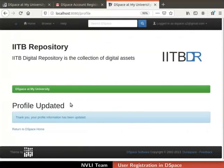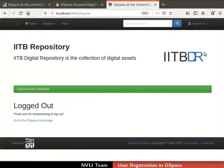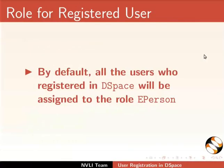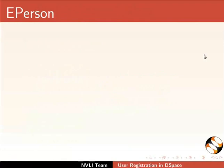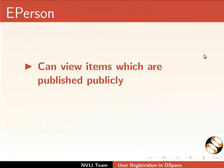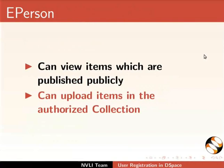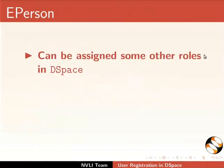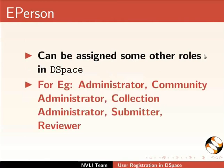Let us log out this user from the DSpace interface. So far, we have successfully registered a user and edited his profile. By default, all users registered in DSpace are assigned to the role E-person. E-person is a registered user of DSpace. E-person can view items which are published publicly, can upload items in the authorized collection, and can also be assigned other roles in DSpace — for example, Administrator, Community Administrator, Collection Administrator, Submitter, and Reviewer.